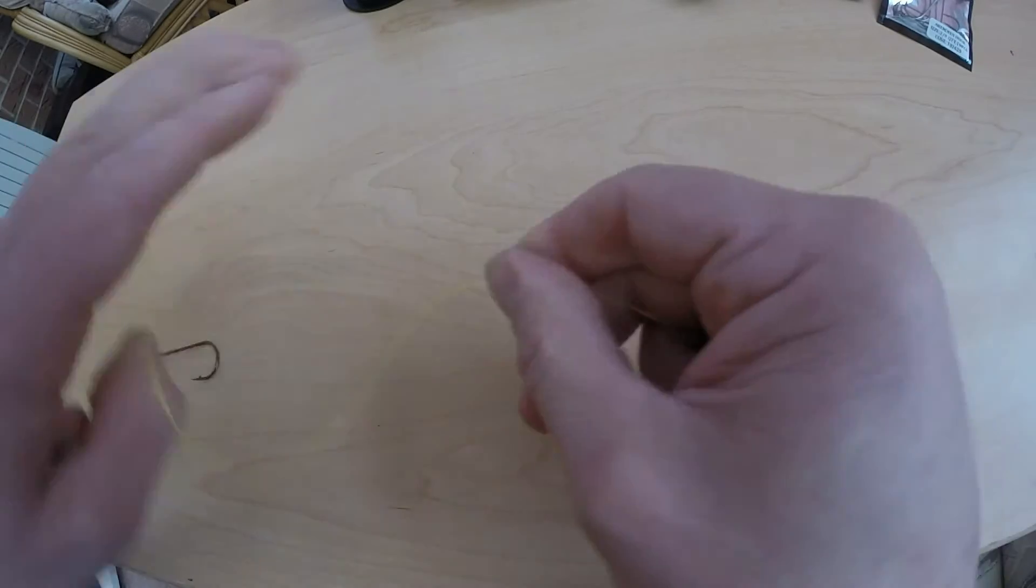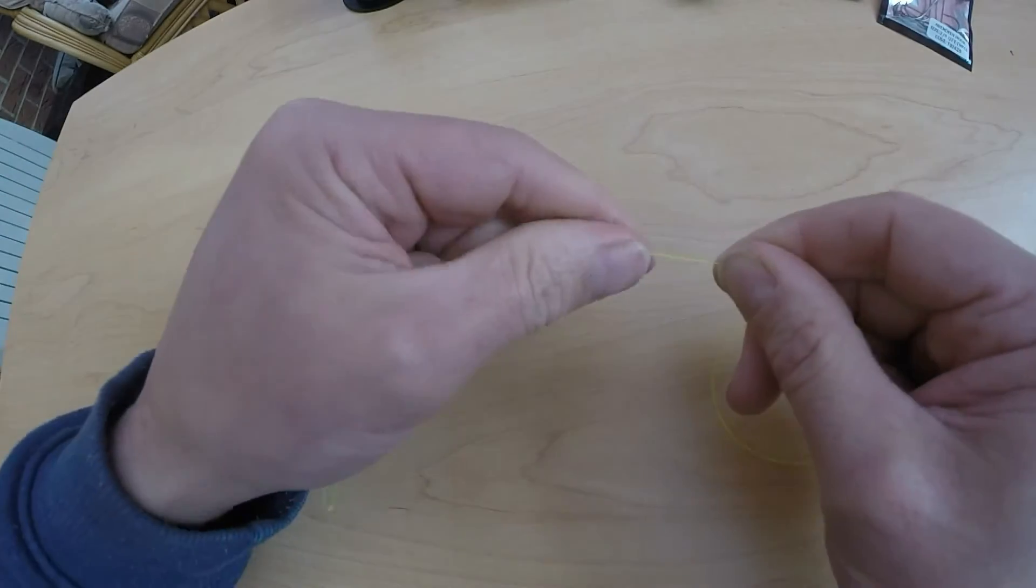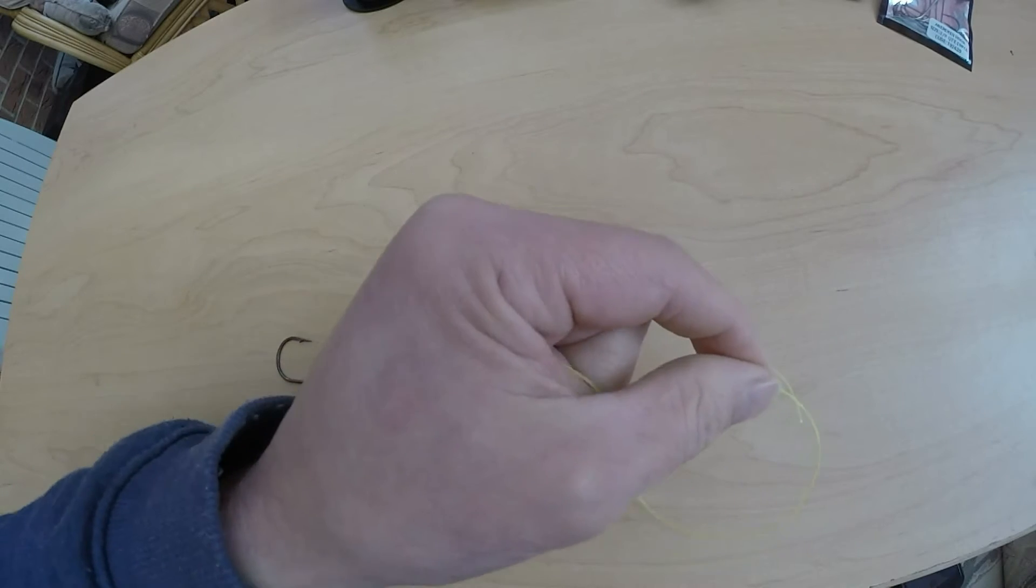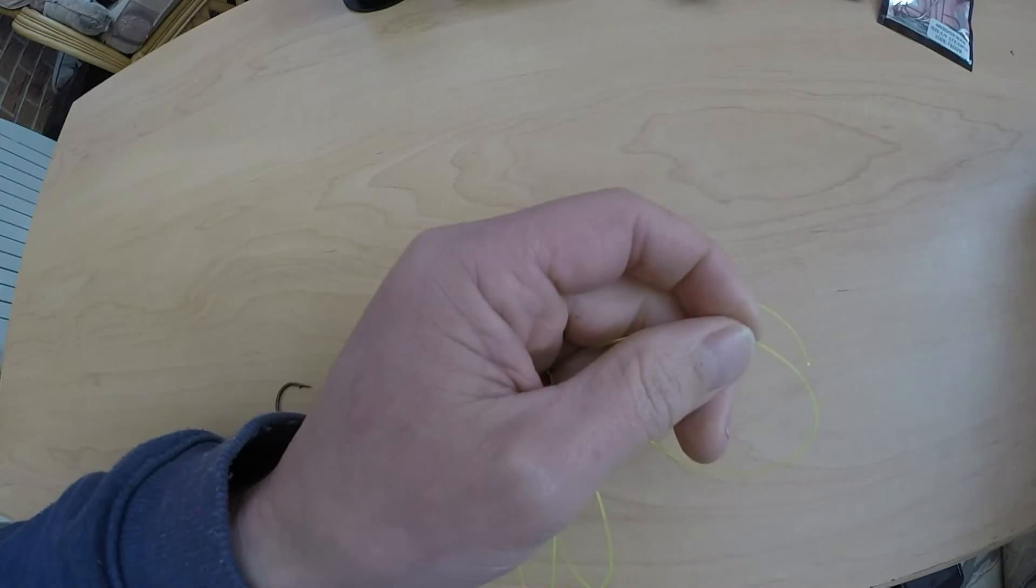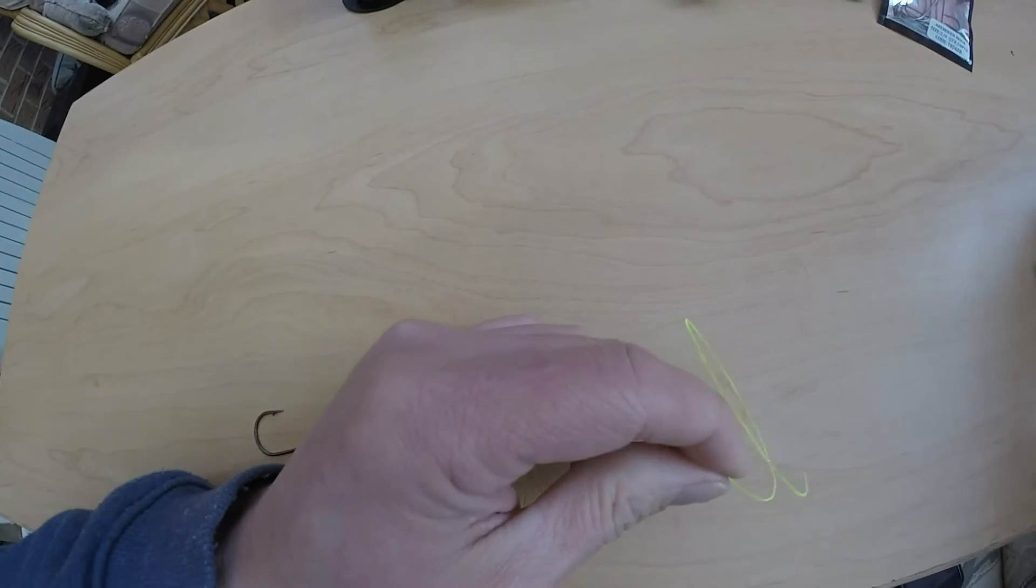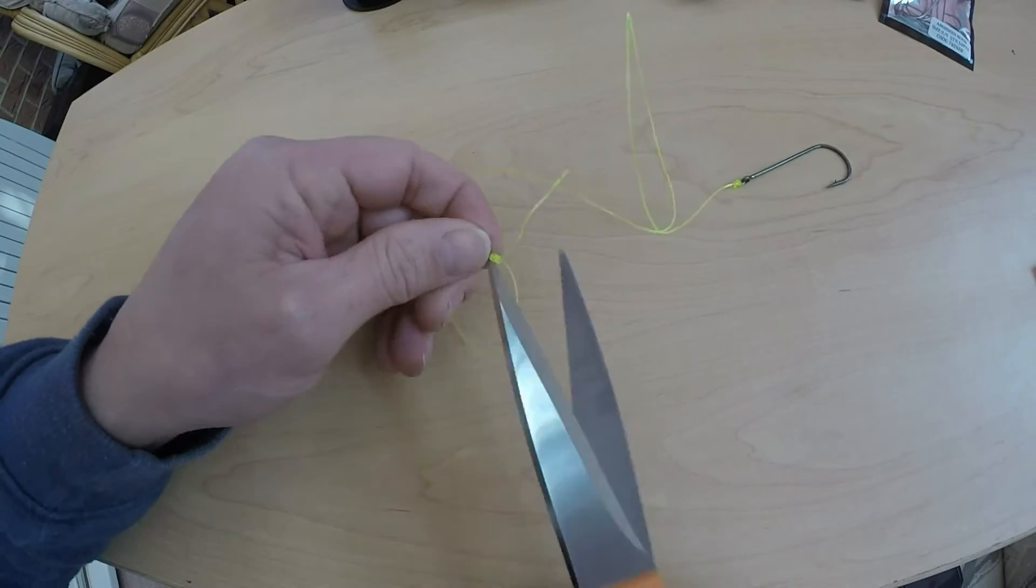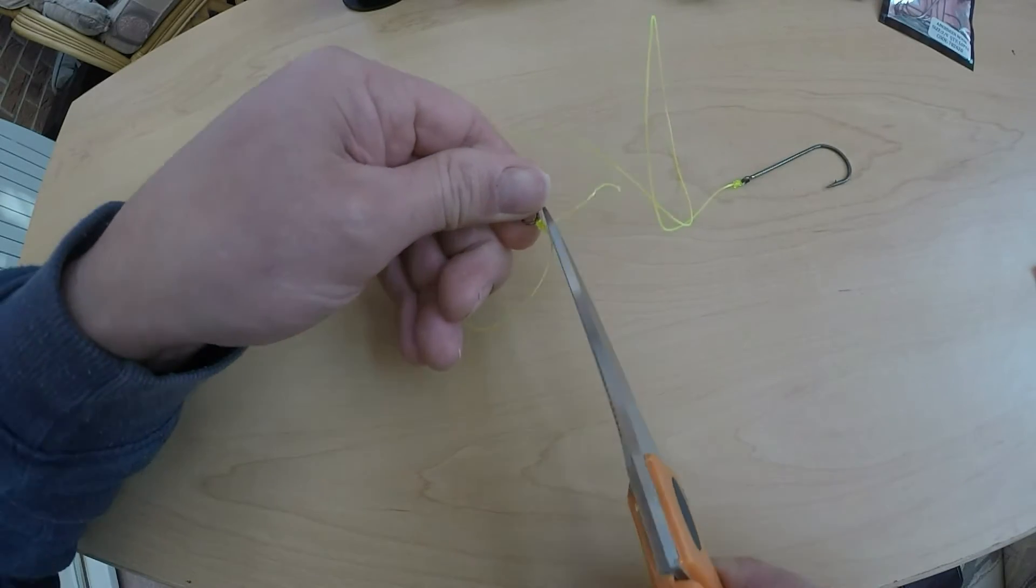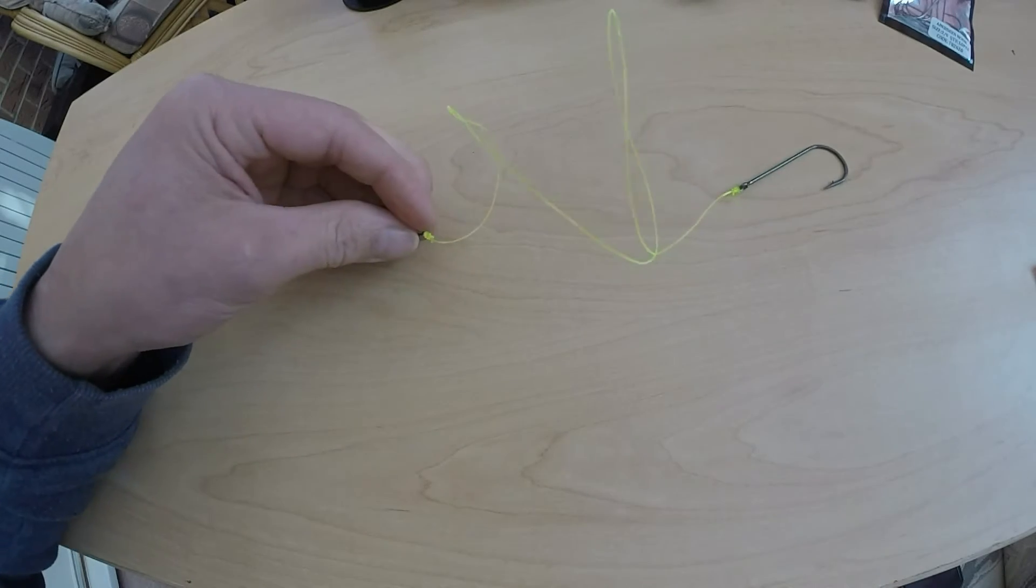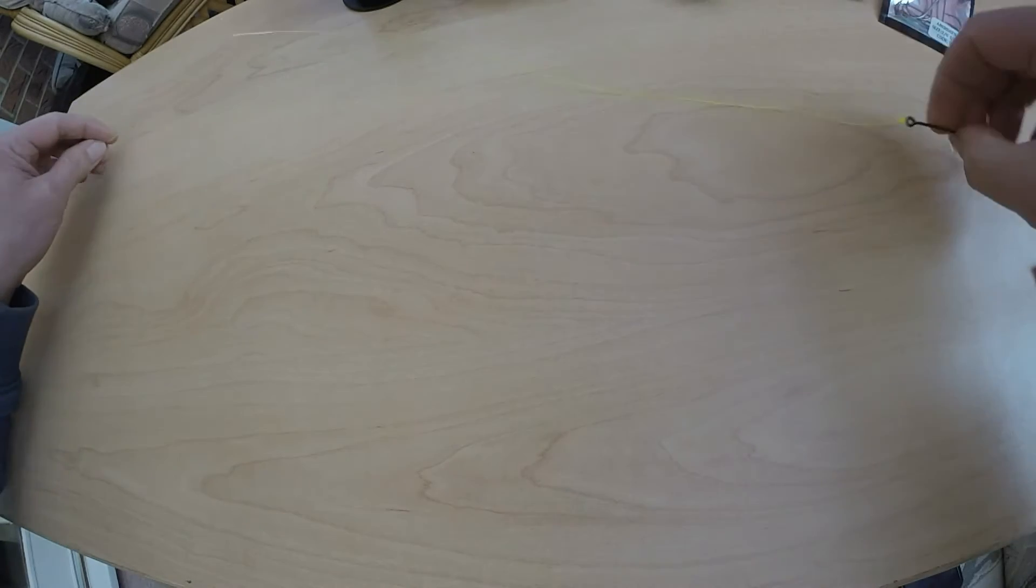Then we'll tie a barrel, a swivel to it. So, we've got about 18 inches there. Right, so I've just tied that swivel to the end of there. I'll just cut the tag end off, that's it. That's that little bit completed.